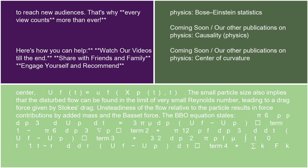Center: uf(t) = uf(xp(t), t). The small particle size also implies that the disturbed flow can be found in the limit of very small Reynolds number, leading to a drag force given by Stokes drag. Unsteadiness of the flow relative to the particle results in force contributions by added mass and the Bassett force.